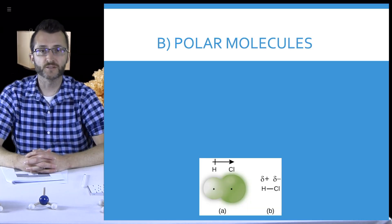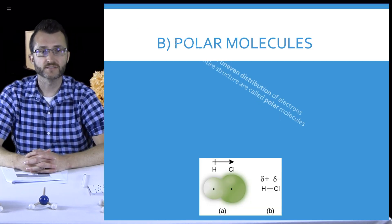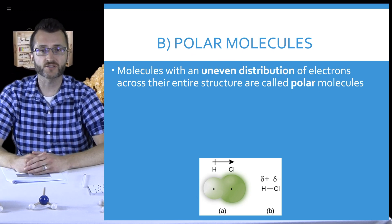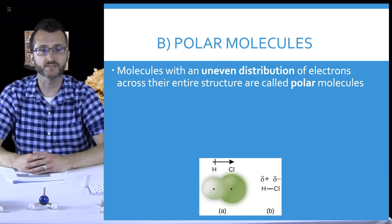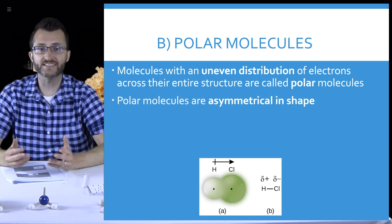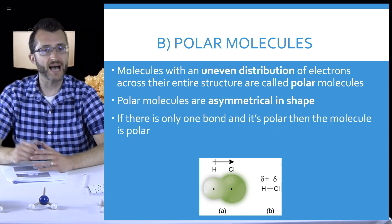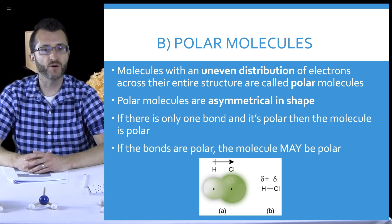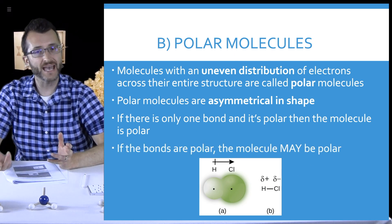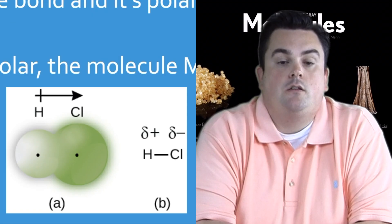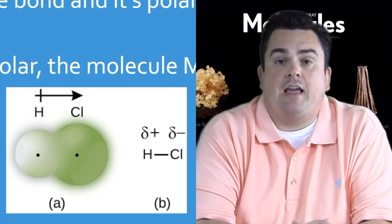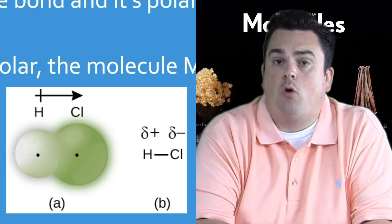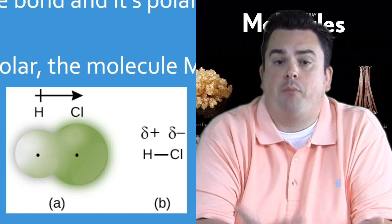Let's talk about the molecular polarity of polar molecules. Molecules with an uneven distribution of electrons across their entire structure are called polar molecules. Polar molecules are asymmetrical in shape. If there is only one bond and it's polar, then the molecule is polar. Looking at our diagram, we've got HCl with a polar bond between H and Cl. Since it's the only bond, this gives rise to a polar molecule.